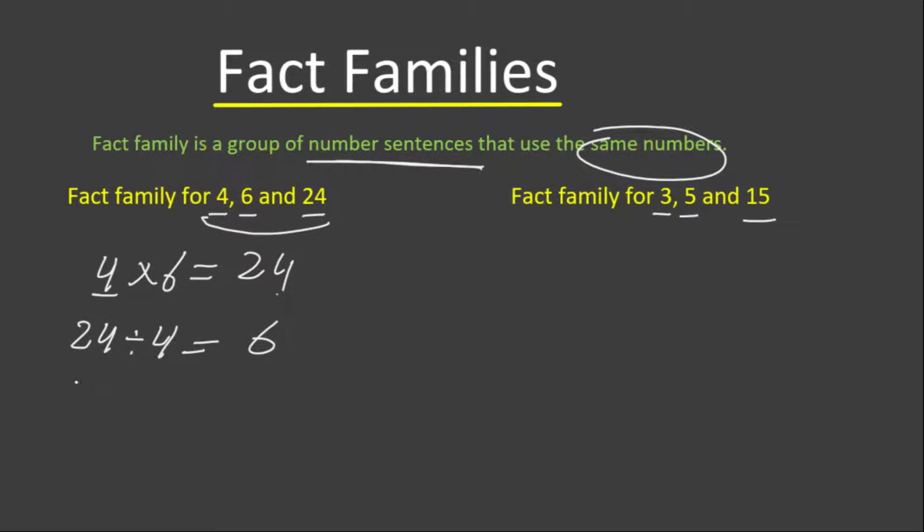On the other hand, if we change the order of writing the factors, again we will get the same result, which is 24. 6 times 4 is 24.